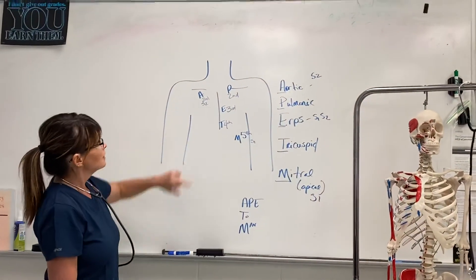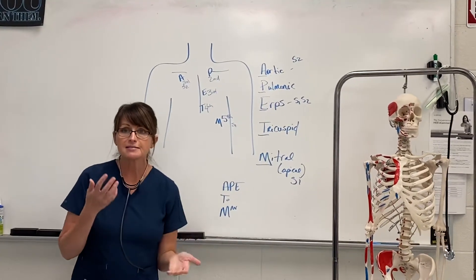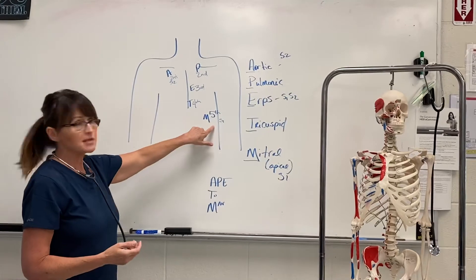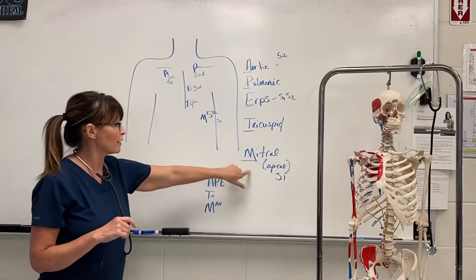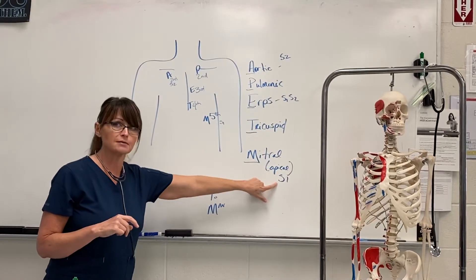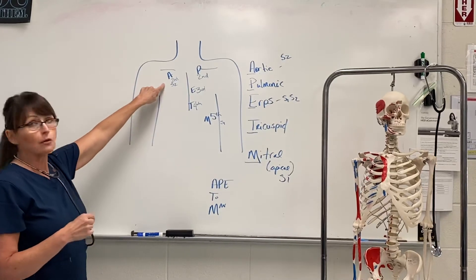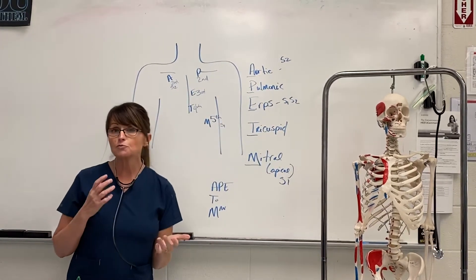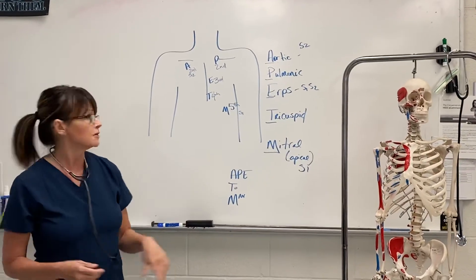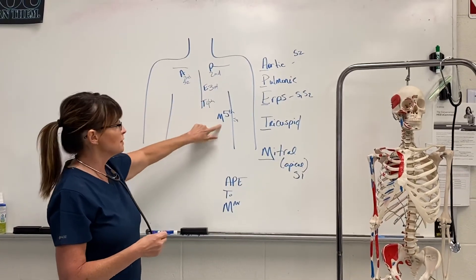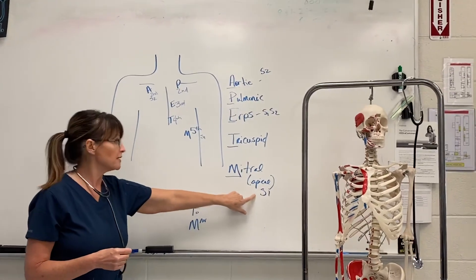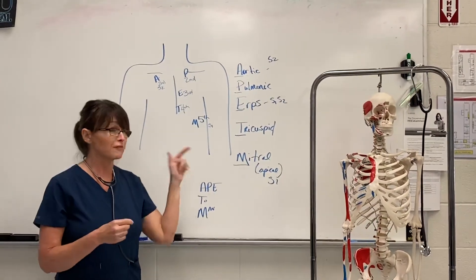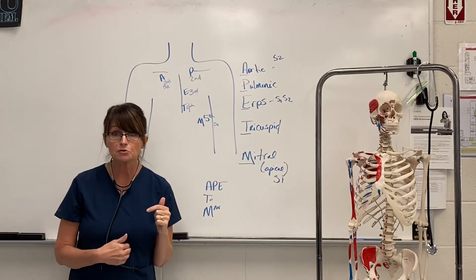Now, what does that mean? When we hear our heart sound, we hear a lub-dub, lub-dub — that is S1 and S2. The lub sound is S1, the dub is S2. S1, or the lub sound, is heard best at the mitral valve, or the apical pulse. S2 is heard best at the aortic valve, so your dub is heard best there. Your Erb's point is where you hear both S1 and S2 quite clearly. So: aortic, pulmonic, Erb's point, tricuspid, mitral — the mitral is your apical pulse; do not get that mixed up with the A of the aortic. S1, S2, lub-dub. Those are the five spots you'll be expected to auscultate in your head-to-toe assessments.